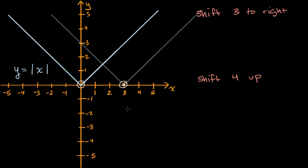So we say, this looks like an absolute value, so it's going to have the form y is equal to the absolute value of something. How do I, if x is three, make that equal to zero? Well, I can subtract three from it. If I say y is equal to the absolute value of x minus three, let's try it out. When x is equal to three, three minus three is zero, absolute value of that is zero. That works out. When x is equal to four, four minus three is one, absolute value of one is indeed one. And if x is equal to two, two minus three is negative one, but the absolute value of that is one.